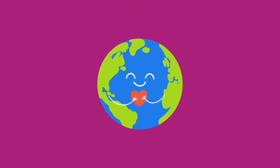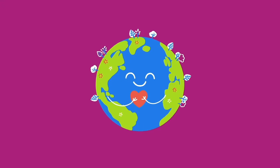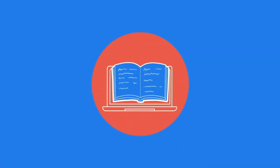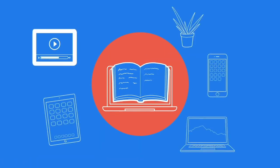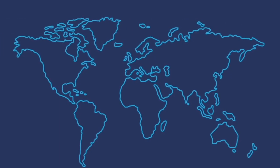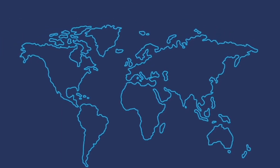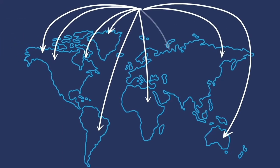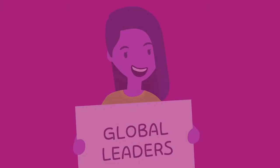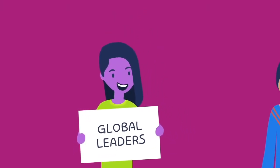We all want to make the world a better place, and we can start in the classroom. When young people receive a global education, it does more than prepare them for academic success and to thrive in a global marketplace. Global learning teaches students how to think globally and act locally to bring about positive, lasting change. It creates global leaders.